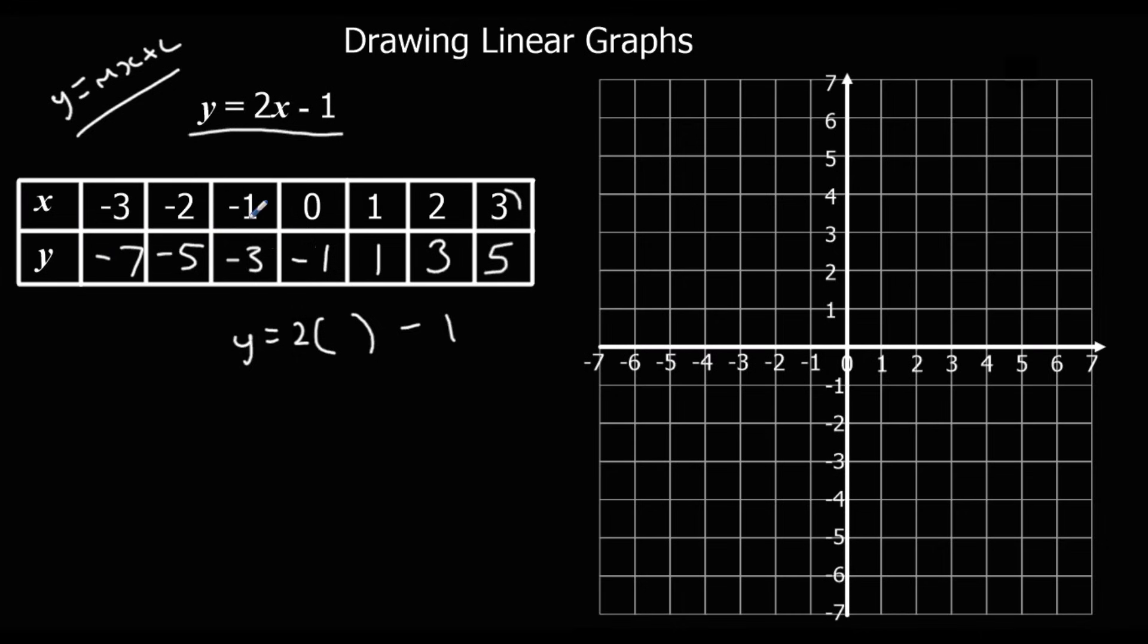And then these turn into coordinates. So this is a set of coordinates here. So this one turns into 3, 5. We can plot that on the graph. This one turns into 2, 3. We can plot that on the graph. This is 1, 1.